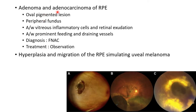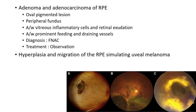Adenoma and adenocarcinoma of retinal pigment epithelium usually present as an oval pigmented lesion in the peripheral fundus. They can be associated with vitreous inflammatory cells, retinal exudation, and prominent feeding and draining vessels. Diagnosis can be done by fine needle aspiration cytology, and treatment is by observation. There can be hyperplasia and migration of retinal pigment epithelium which can simulate uveal melanoma.